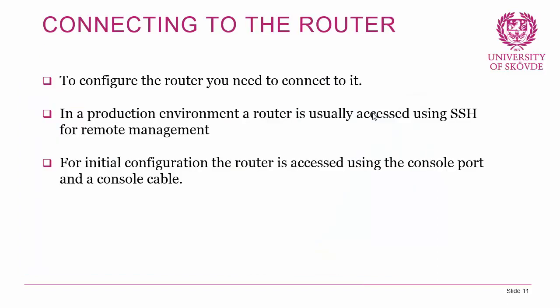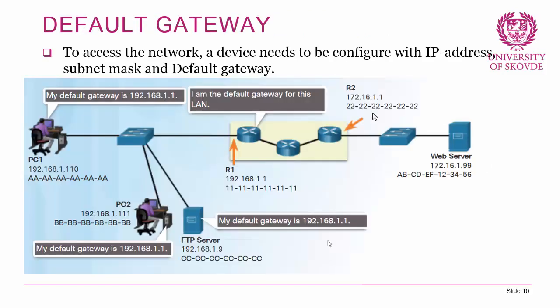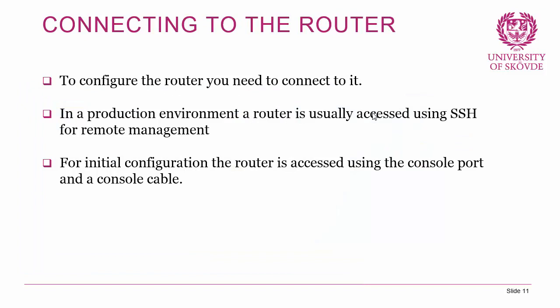Next, a short discussion on how we connect to the router. To configure the router, you need to connect to it. In a production environment, a router is usually accessed using SSH for remote management. However, for initial configuration when you take the router out of the box, there's no configuration on it — all interfaces are disabled — so there's no way to access it through SSH. You have to use a console cable to connect via the console port with terminal emulation software such as TeraTerm.